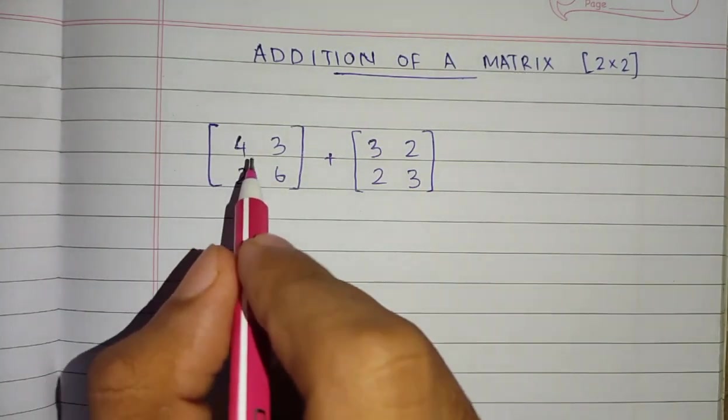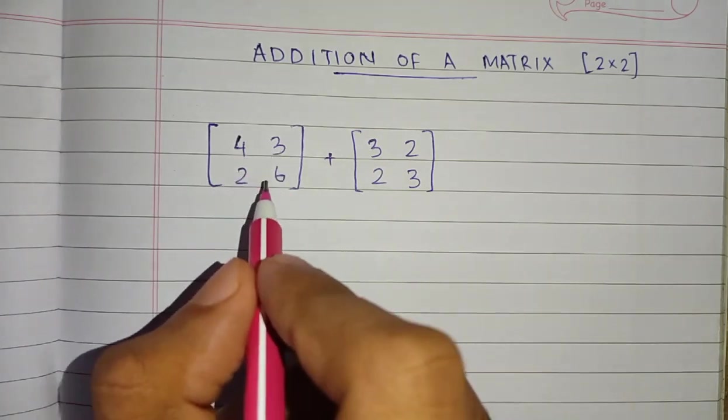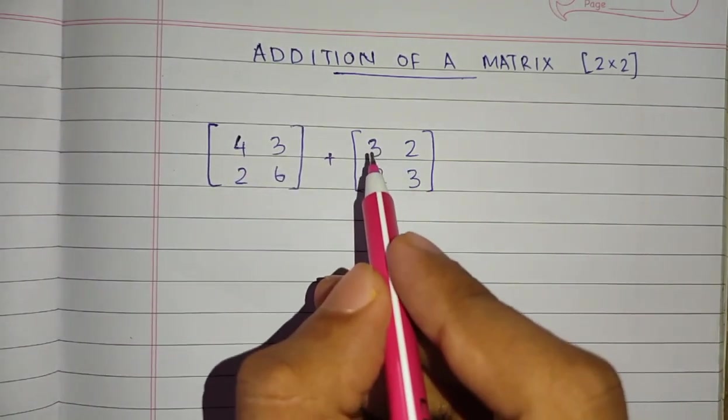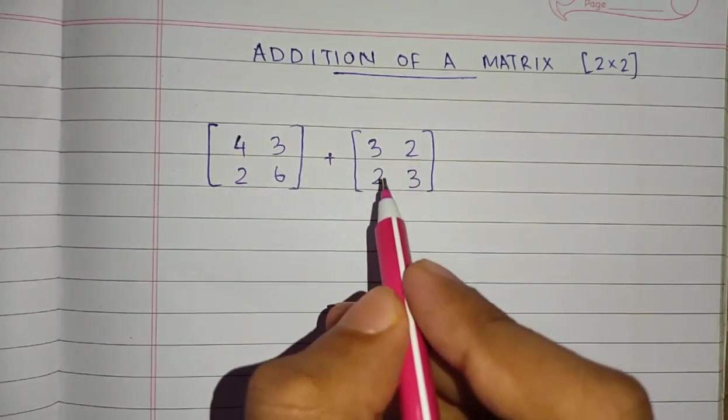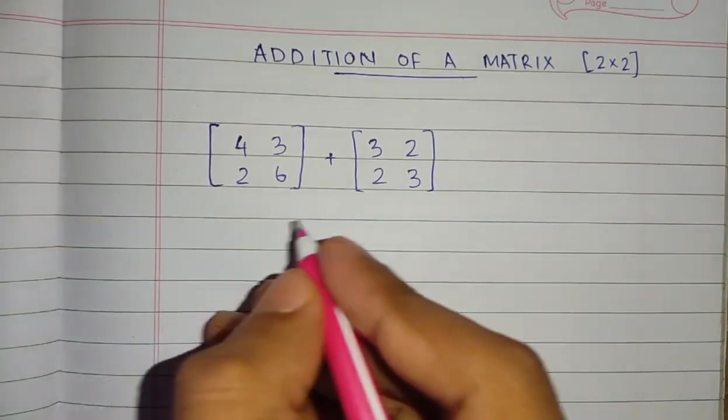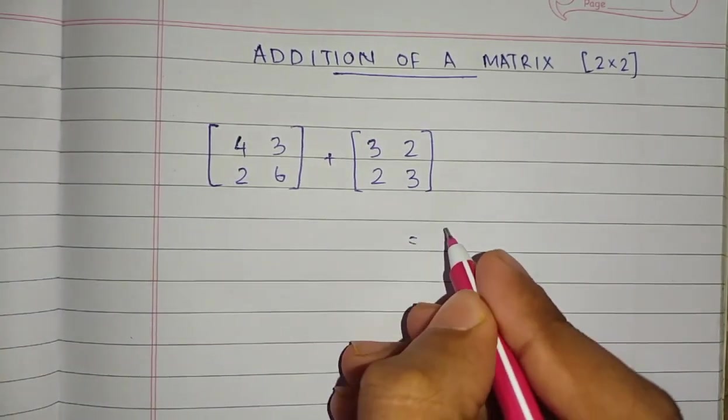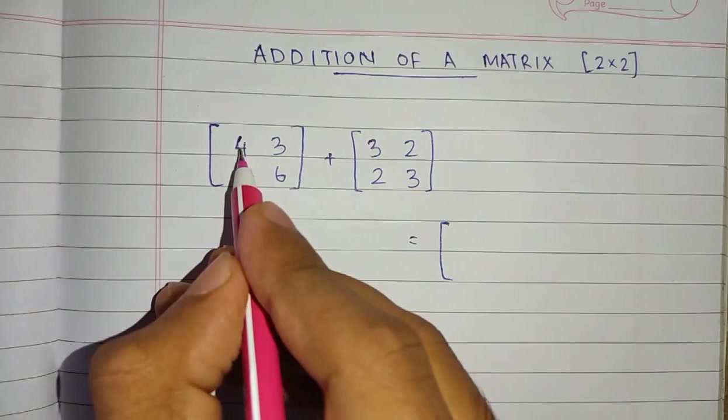First, we have a 2 by 2 matrix here: 4, 3, 2, 6. And another matrix of the same 2 by 2: 3, 2, 2, 3. When we add, we will take the first element here.